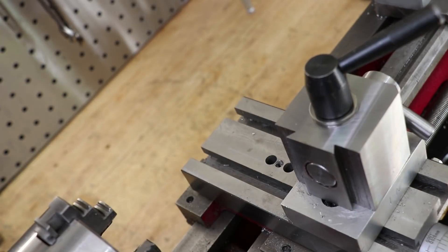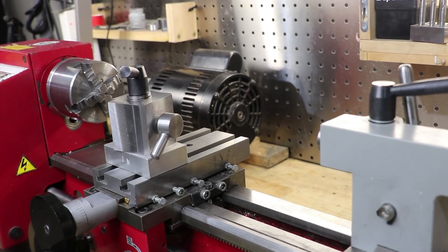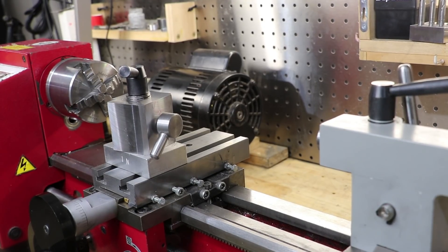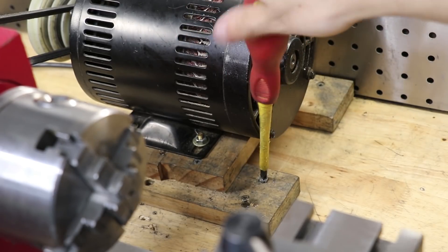With the first mod done, I'll get started with the teardown. Thankfully with these little lathes, it's pretty simple and straightforward. I'll remove the motor pulley, and then the chuck.